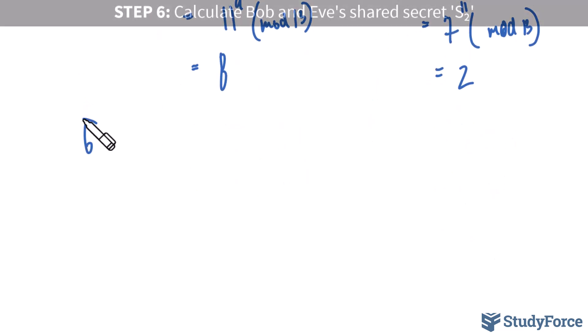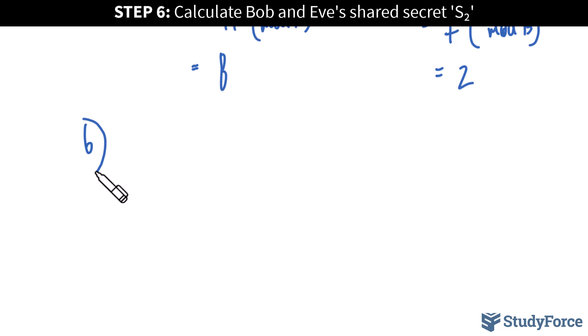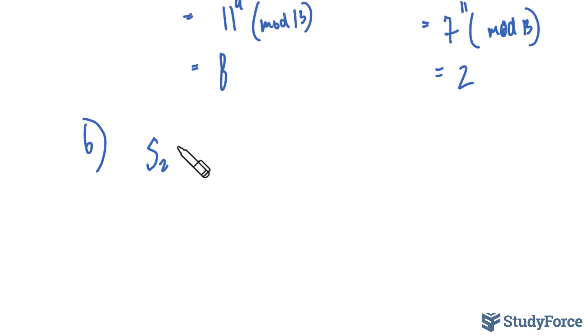In step number six, which is the final step, Eve and Bob compute another shared secret. We'll call this shared secret S sub 2. And again, it's calculated by taking alpha, the value of b times the value of e, mod 13.